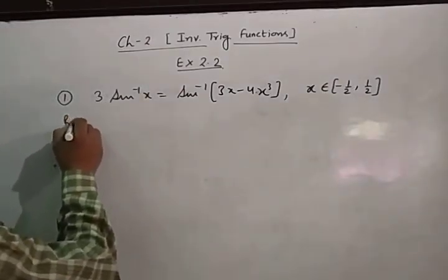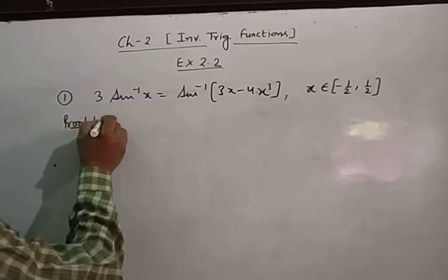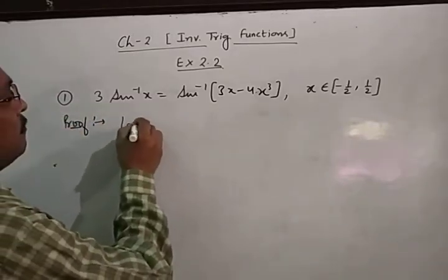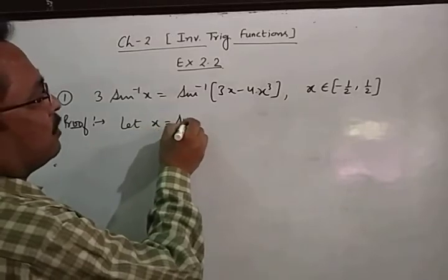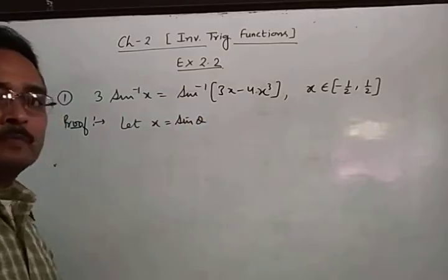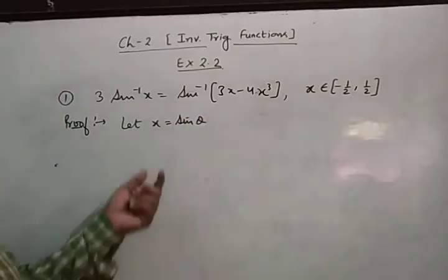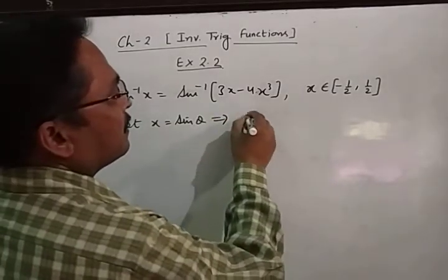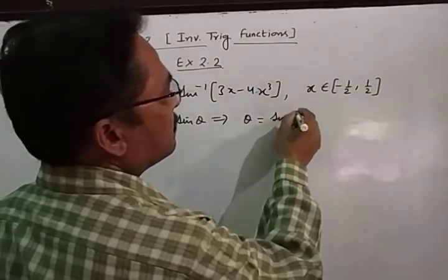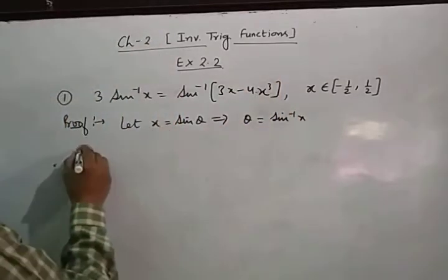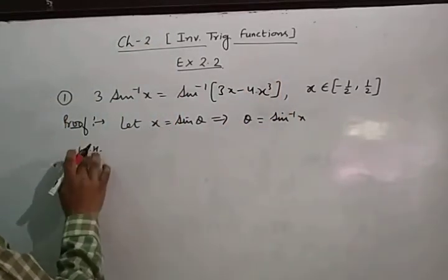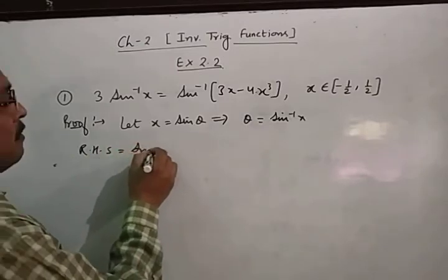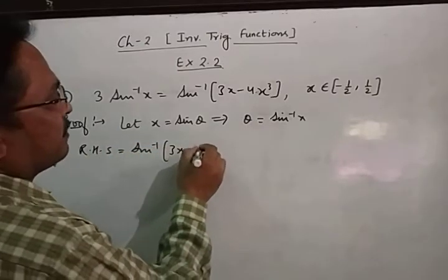Proof. Let x = sinθ. This implies θ = sin⁻¹x. Now, the RHS is sin⁻¹(3x − 4x³).